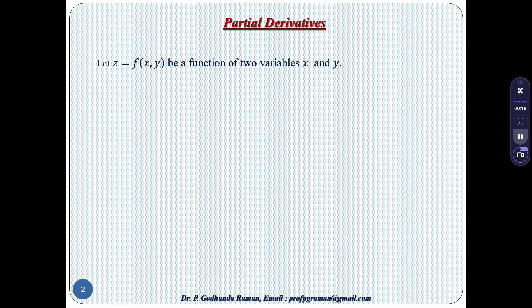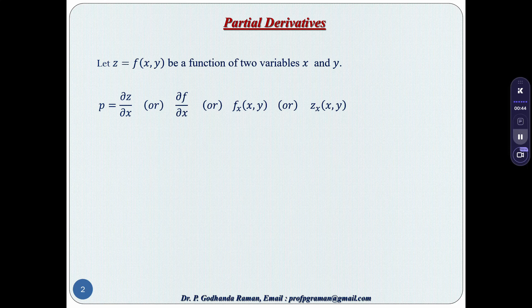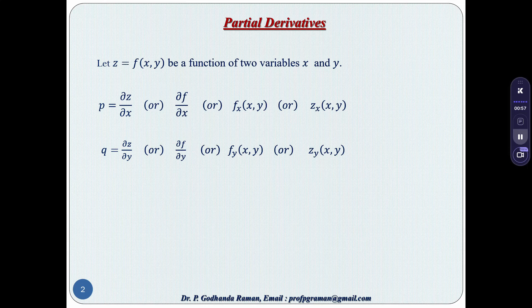Let z equal to f be a function of two variables x and y. If we keep y as a constant, then z is a function of x only. If we keep x as a constant, then z is a function of y only. The partial derivative of z with respect to x is denoted by p, or ∂z/∂x, or ∂f/∂x, or fx, or zx. Similarly, the partial derivative of z with respect to y, keeping x constant, is denoted by q, or ∂z/∂y, or ∂f/∂y, or fy, or zy.